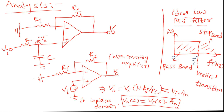For a non-inverting amplifier circuit like this, where the input is connected to the non-inverting terminal, we know the output voltage expression: V0 = VA × (1 + RF/RI), where (1 + RF/RI) is the gain of the amplifier, denoted A0. In Laplace domain, we can write the same expression as: V0(S) = VA(S) × A0. This is the output voltage expression for a non-inverting amplifier circuit.